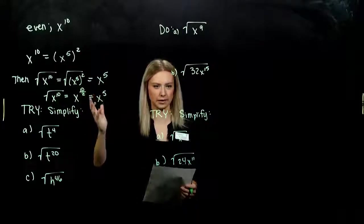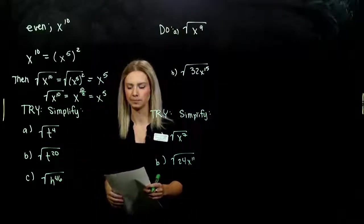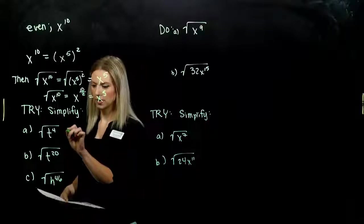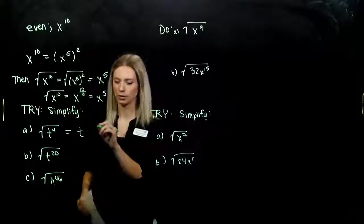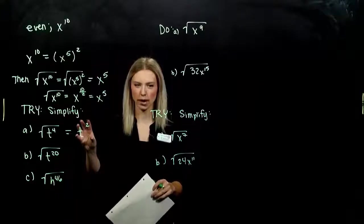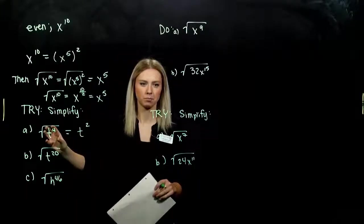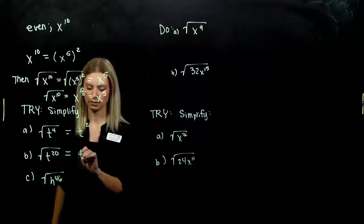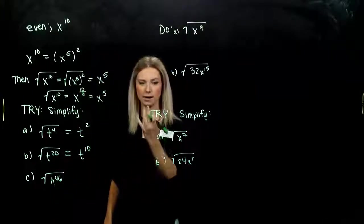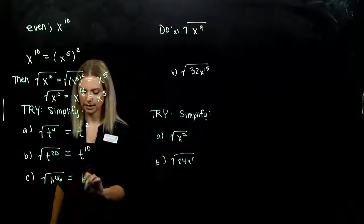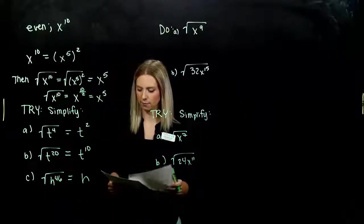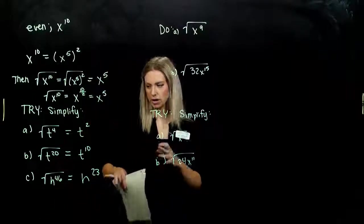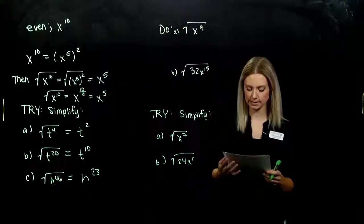Go ahead and evaluate these three. First one: 4 is even, so it is divisible by 2 — we get t squared. We can always check: if I square this quantity, do I get t to the fourth? Yes. Next: what quantity do I need to square to get t to the twentieth? t¹⁰ — taking 20 and dividing by 2. And last: 46 divided by 2 gives 23. We can square each of those and get our radicands back.